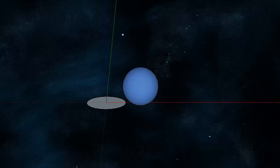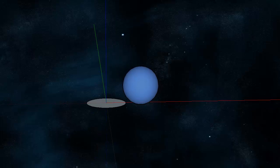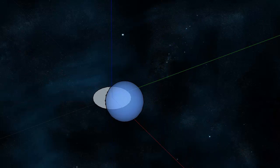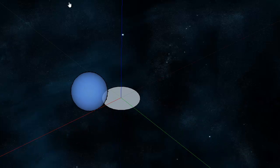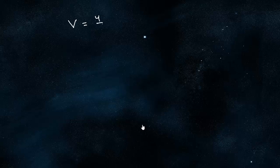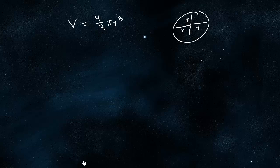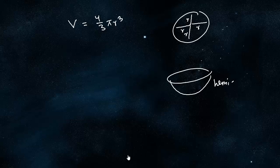There is another shape known as the sphere. The sphere is different from a circle — a circle is flat and 2D, while a sphere is like a ball. The difference between a sphere and a circle is the difference between a 2D and a 3D object. The volume of a sphere is given by four thirds pi r cubed. Half of a sphere is a hemisphere, and the volume of a hemisphere is the volume of a sphere divided by 2.